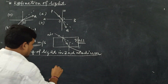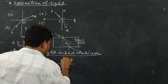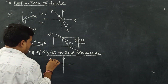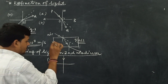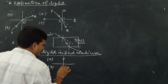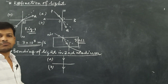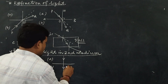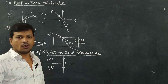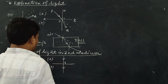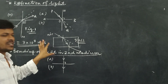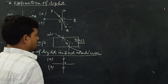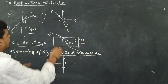But what happens in the case of normal incidence? If the light ray is incident normally, the path of the light ray remains unaltered. This may also be considered as refraction of light, but there are some limitations. This is the refraction of light.